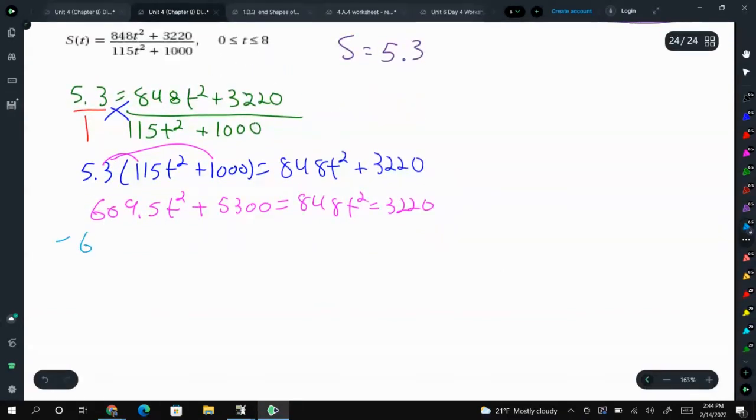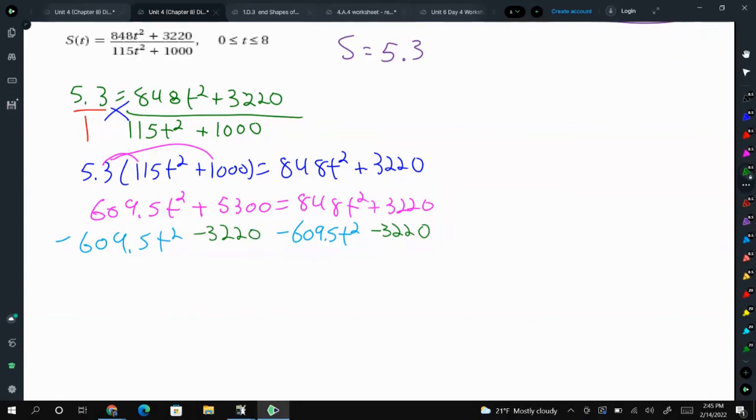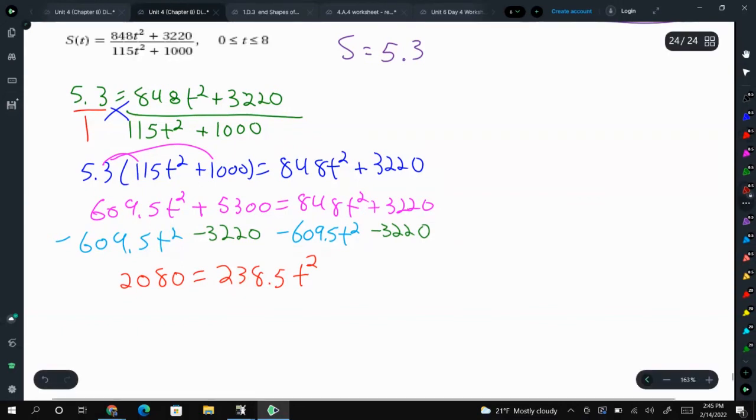And if we type that into the calculator, we're going to get 609.5 T squared plus 5,300, and then we have 848 T squared equals 3,220. Then we need to get T by itself. So let's subtract 609.5 T squared from both sides. And then we're also going to subtract 3,220 from both sides. And in doing this, we get 2,080 equals 238.5 T squared. So then we divide both sides by 238.5.